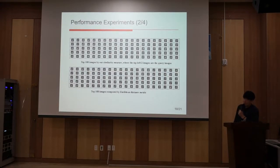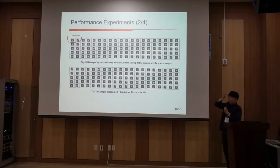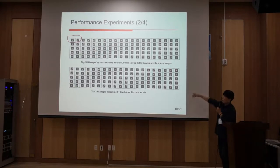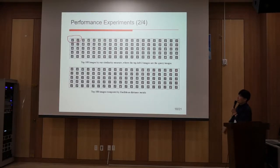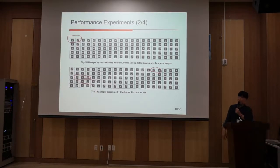This is another example where we use two images as the query image and find the 100 most similar images. The first result is made by our algorithm. The second result is by the conventional Euclidean distance-based ranking. In the conventional result, images retrieved are not 4 — for example, digits 1, 1, 9, 1, 9 appear. This experiment result shows that our algorithm is superior to the conventional algorithm.